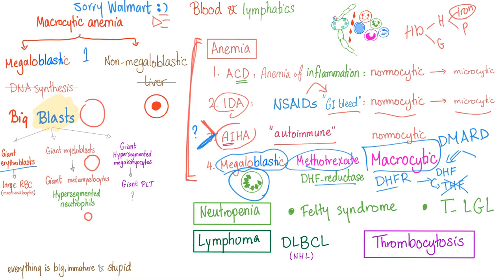Last, we have giant platelets. Why aren't they giant hypersegmented platelets? Because a platelet doesn't have a nucleus — it's not even a cell. It's just a piece of the megakaryocyte.